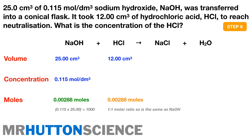Step 7 — calculate the concentration of HCl. We rearrange to: concentration = moles ÷ volume. The volume is in cm³, so we convert: either do moles ÷ 12 × 1000, or moles ÷ (12 ÷ 1000). Both give the same answer. This gives us the concentration of hydrochloric acid needed to neutralise 25 cm³ of 0.115 mol/dm³ sodium hydroxide.